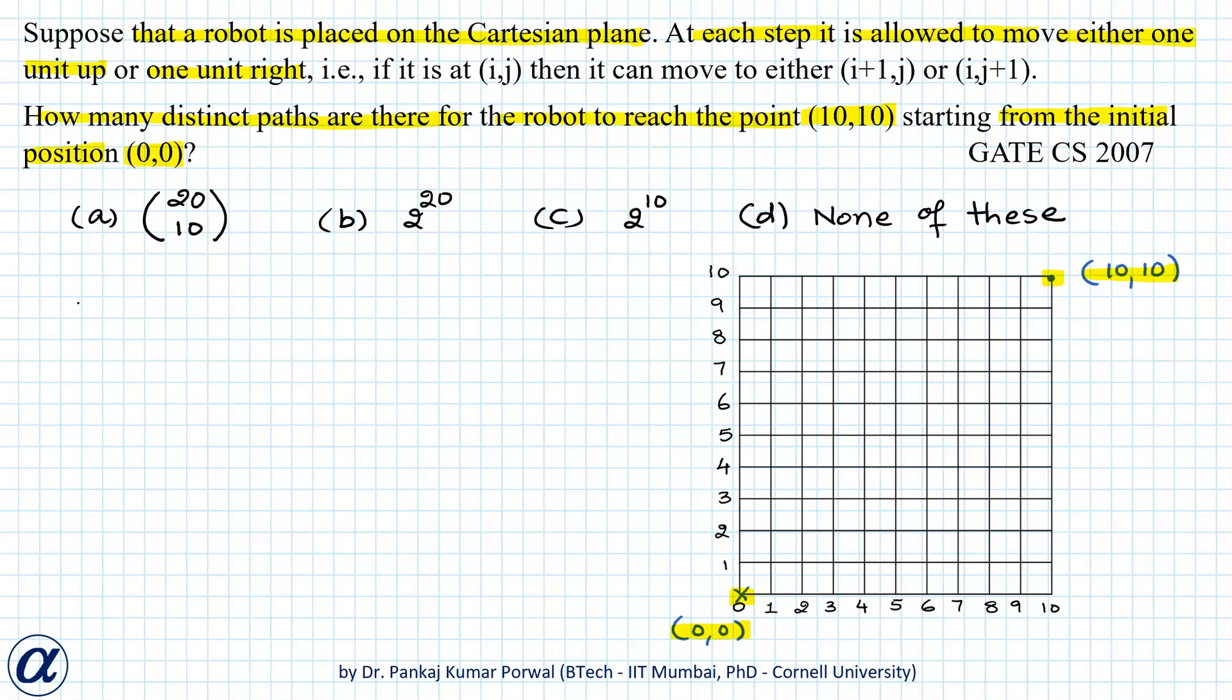Let's denote that by R, and 10 steps in the up direction, denoted by U. So in total the robot has to take 20 steps in succession, and 10 of them have to be in the right direction and remaining 10 in upward direction. This problem can be thought of as the problem of arranging steps.